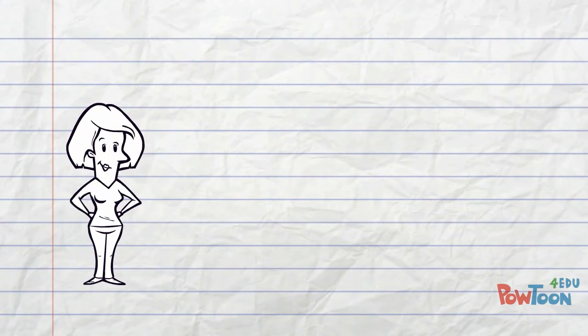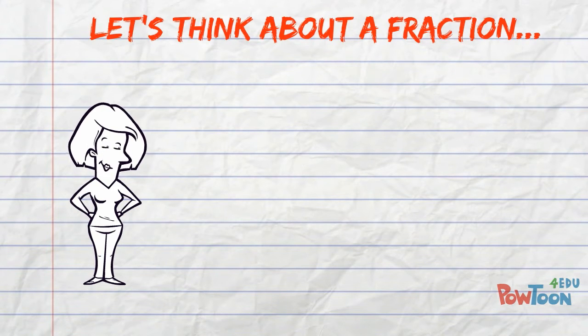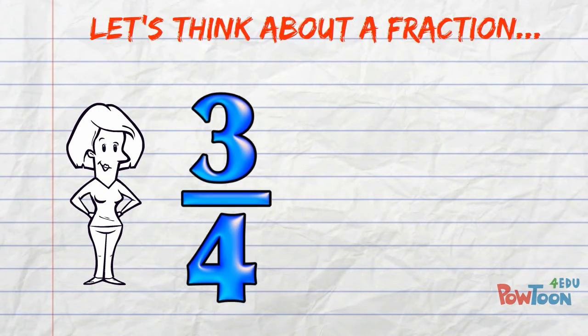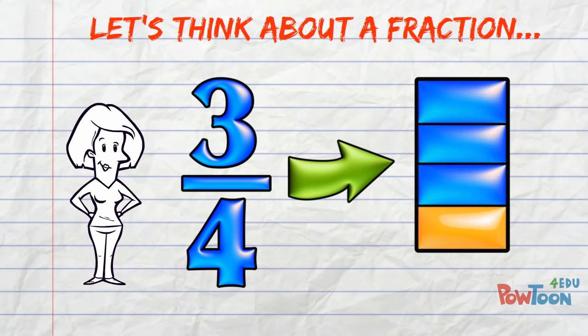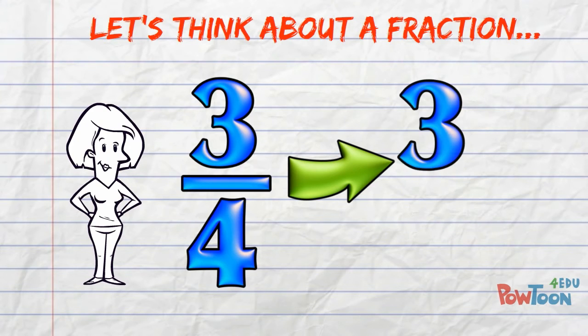Before we get to anything complex, let's just think about a fraction for a moment. 3 quarters, or 3 fourths if you prefer. It means 3 parts out of a whole containing 4 parts. And it also means 3 divided by 4.